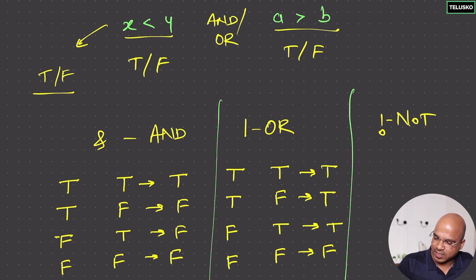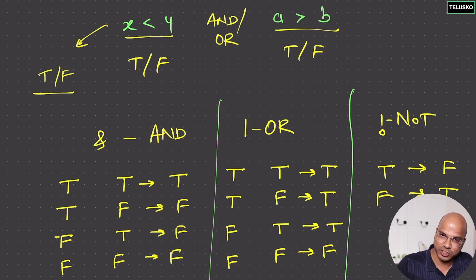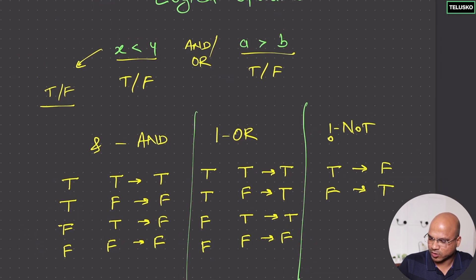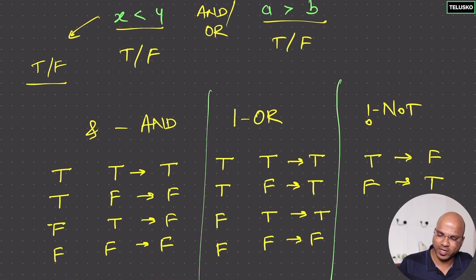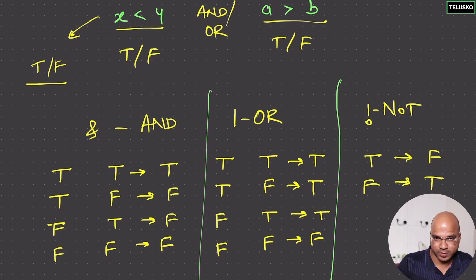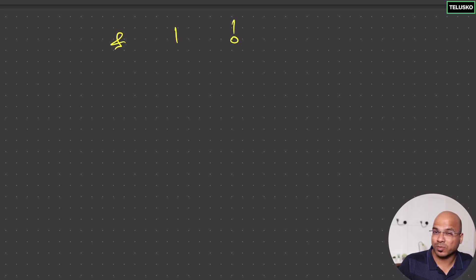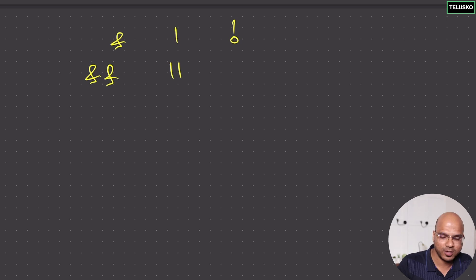We also have the NOT operator, which reverses the value. If you have true and apply NOT, the output is false; if you have false, the output becomes true. Apart from these three, there is also XOR, which we'll discuss later. So the three basic operations are AND, OR, and NOT. In programming you can use a single ampersand or pipe, but the other option is the short-circuit version — double ampersand for AND and double pipe for OR.